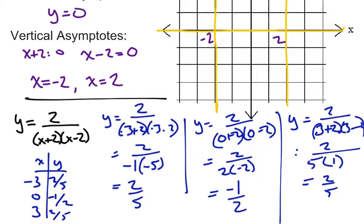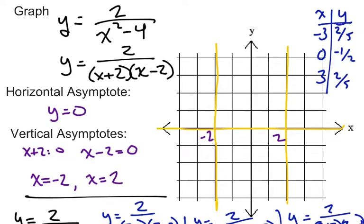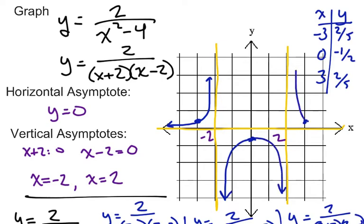Let's use those ordered pairs and plot them on our coordinate system. Negative 3 comma 2 fifths is about right here; 0 comma negative 1 half is down below; and 3 comma 2 fifths is right over here. We only need one point on each interval. Now make your curve go through those points but get close to both asymptotes on each side without crossing them. And there we have our rational function graph when we have more than one vertical asymptote.